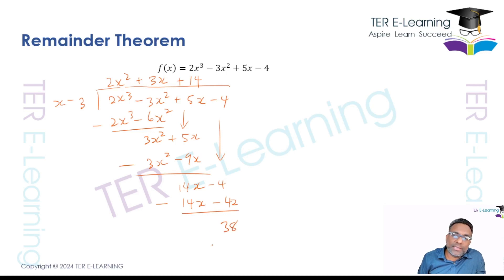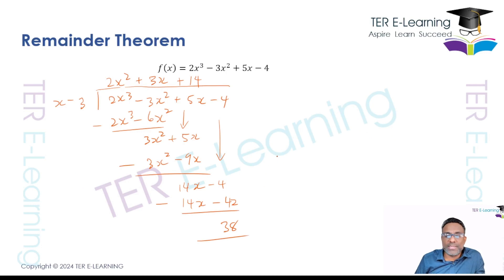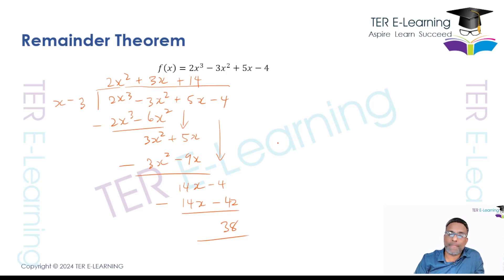We got 38, which is what we got before — the same answer. So this is a simple example of how we do remainder theorem questions. Please remember guys, hit like and subscribe.